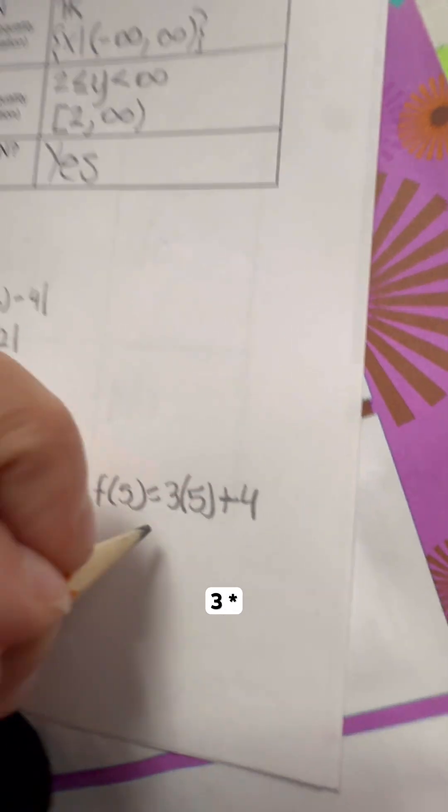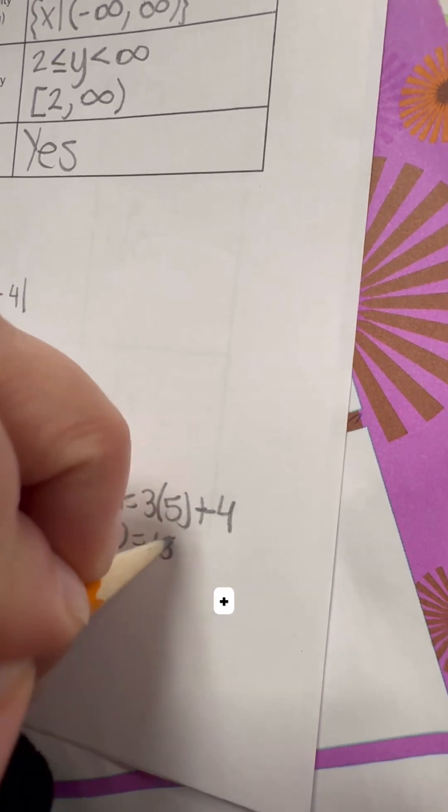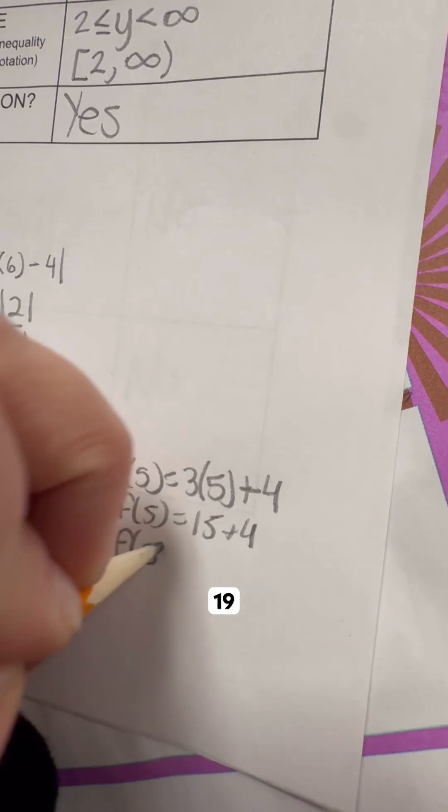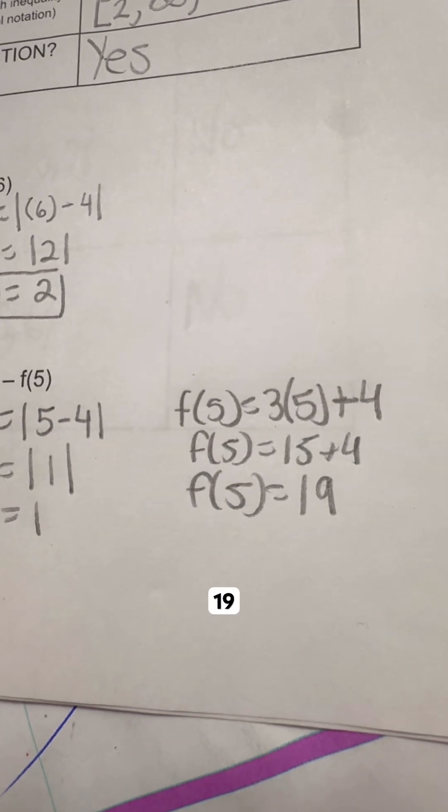So 3 times 5 is going to be 15. 15 plus 4 gives me 19. And so we have f of 5 being 19.